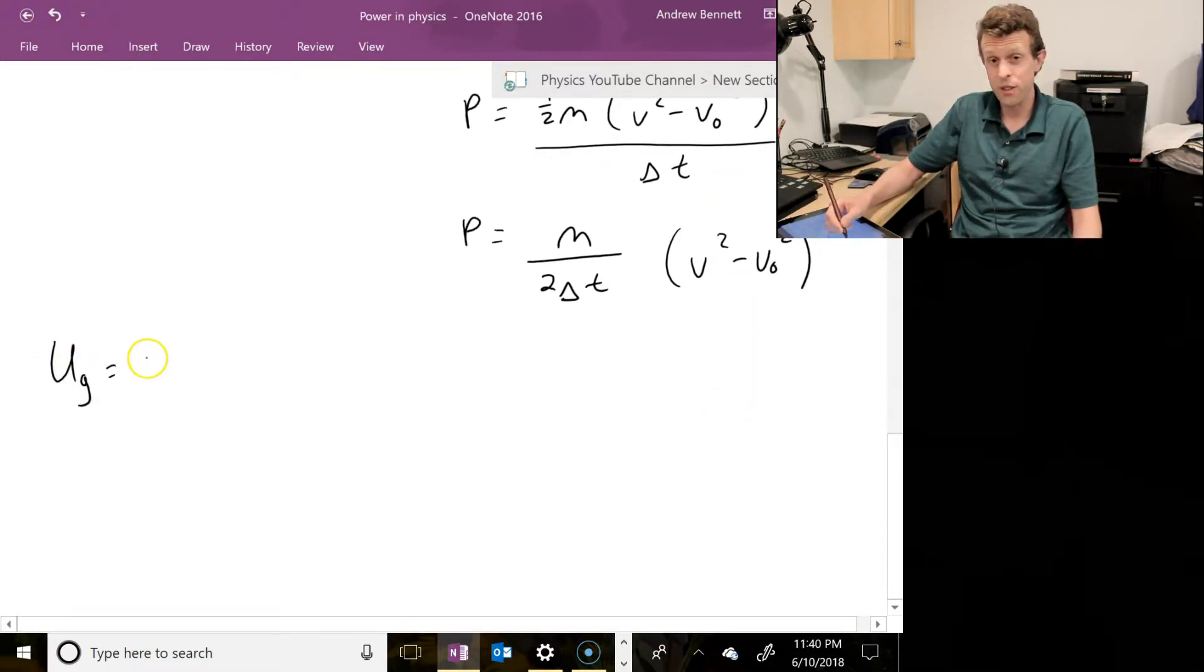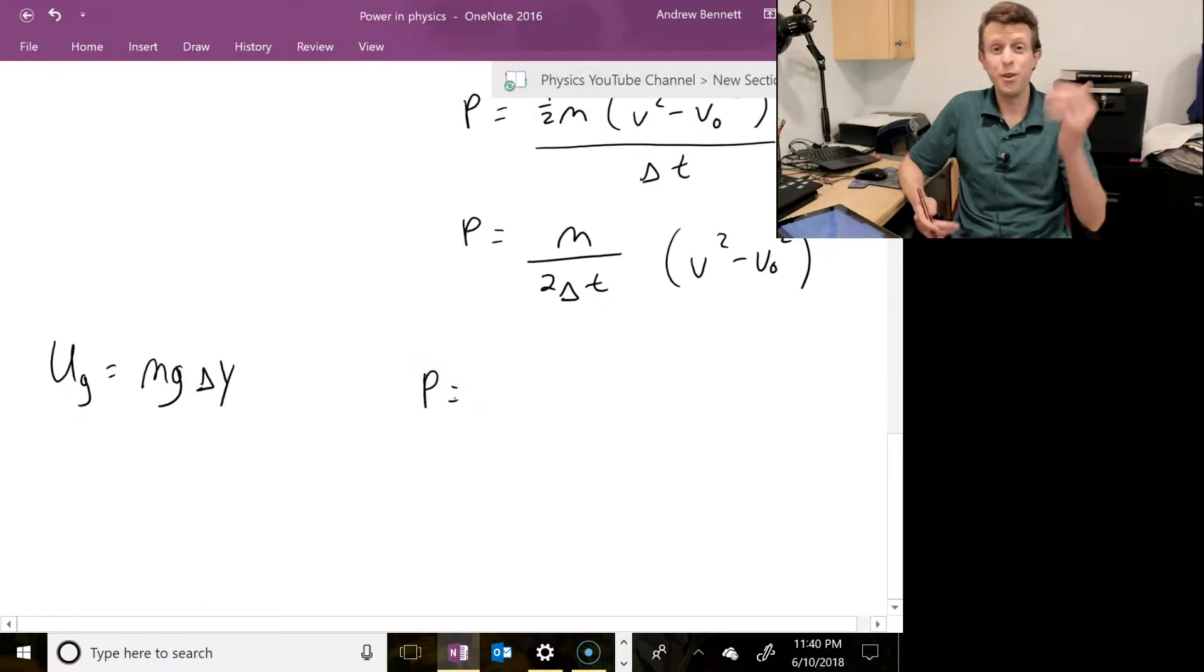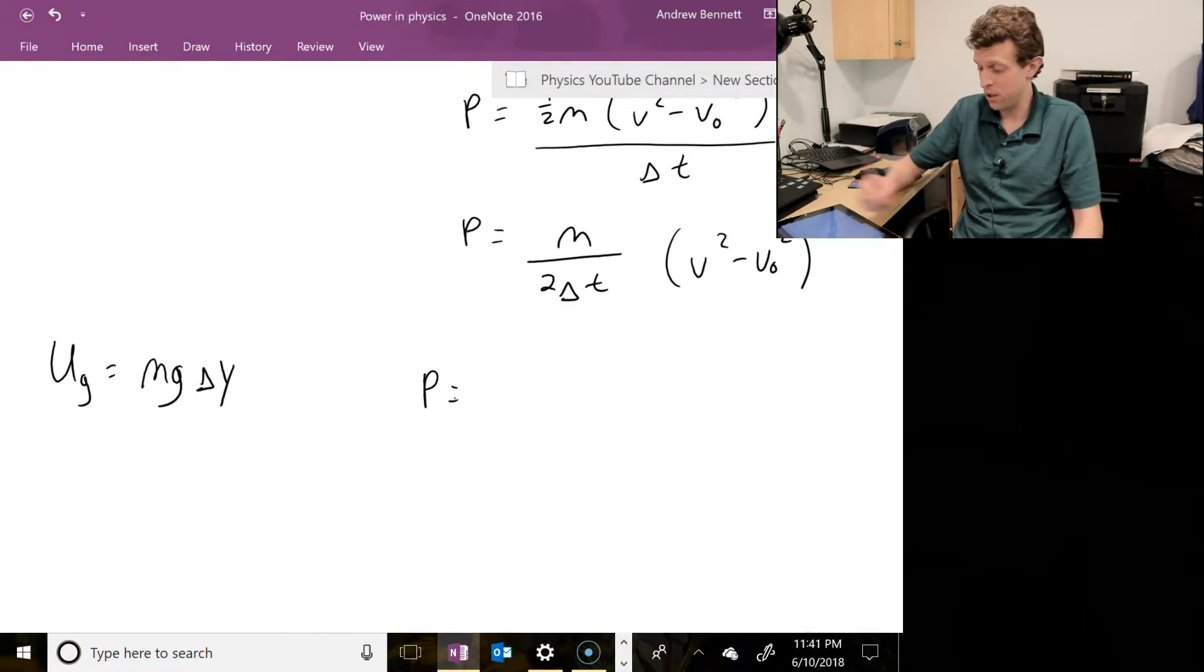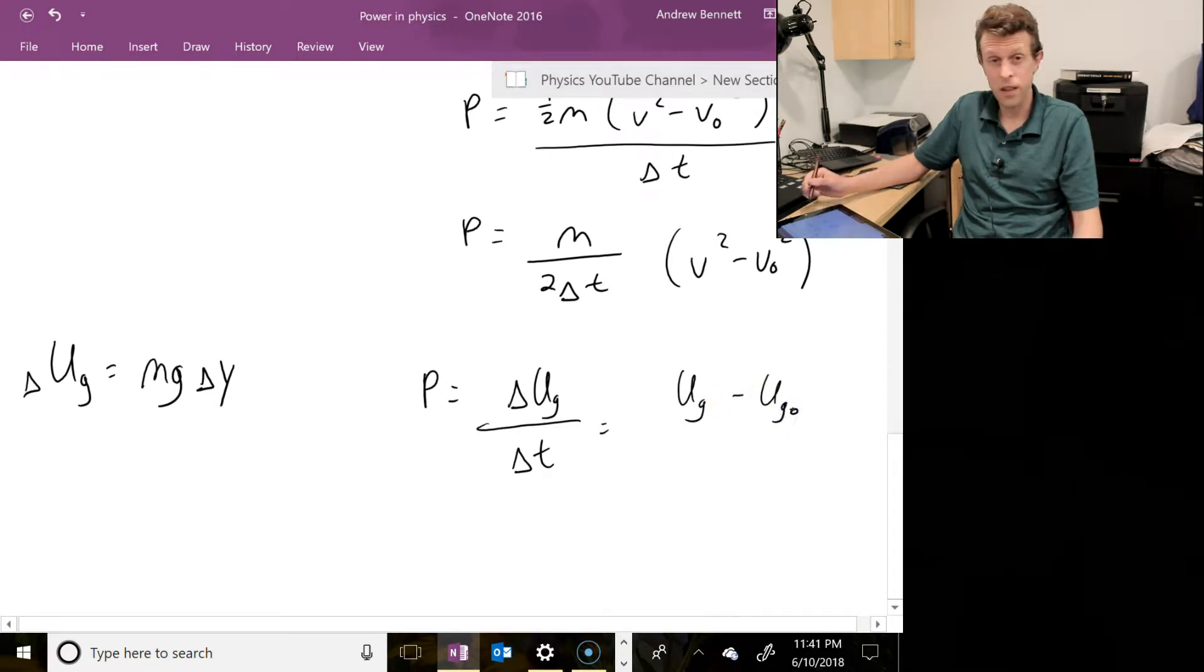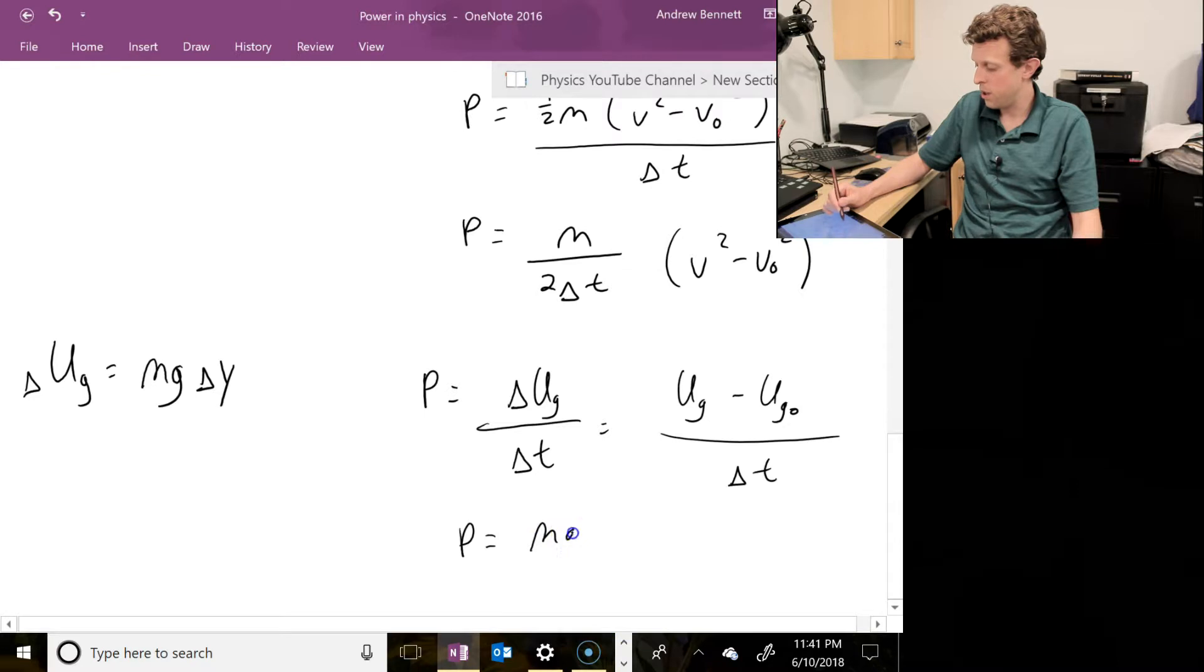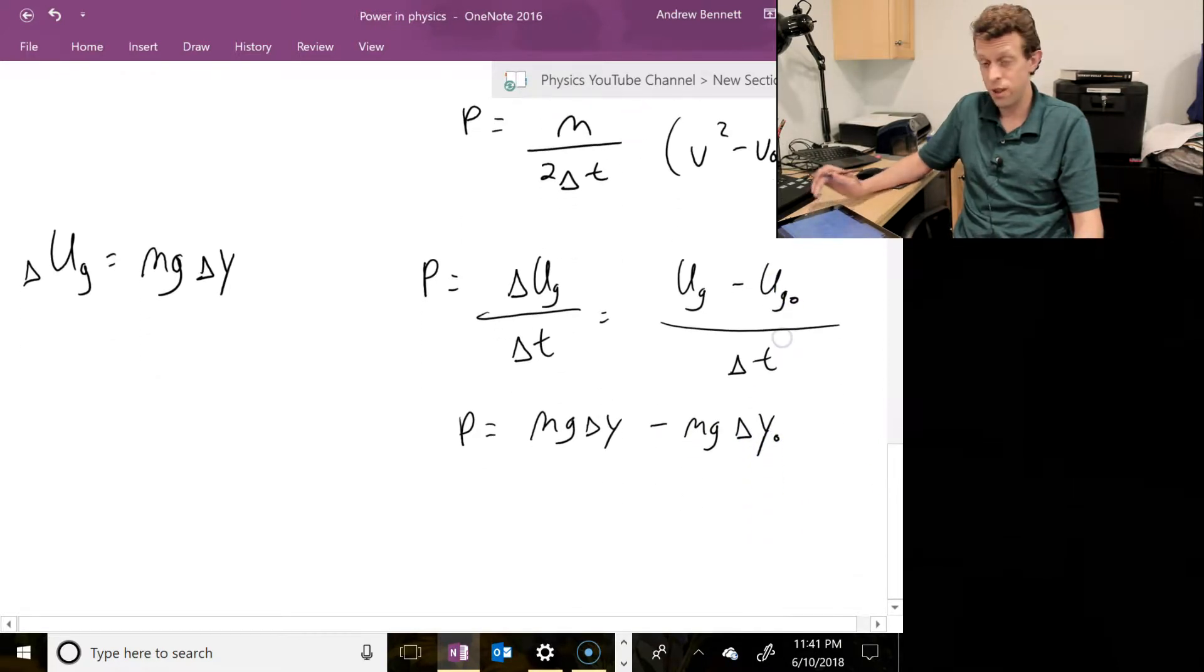So one last example, then. UG, gravitational potential energy. Typically, you do that as m g delta y, or m g h is what you see commonly as well. So then power, if we're, say, raising an elevator at constant speed, it's the gravitational potential energy that's doing the changing there. This also gets a delta on it sometimes. So power would be delta UG over delta T. And again, that's UG minus UG naught, the ending minus the starting gravitational potential energy over delta T. So power would be equal to m g delta y minus m g delta y naught, the starting potential energy on this term, and the ending potential energy over this term, and that's all divided by delta T.